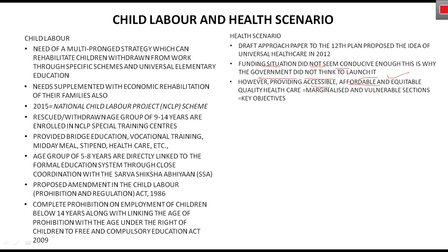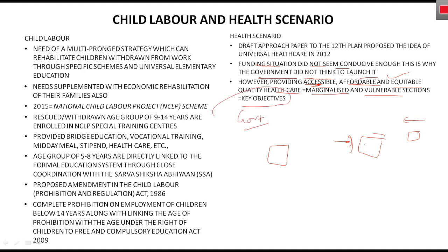However, providing accessible, affordable, and equitable quality health care to the marginalized and vulnerable section of society is the key objective of Government of India. Accessible का मतलब है हर जगह — remote areas में भी — health care की facility हो। Affordable मतलब reasonable prices हों। Equitable मतलब हर जगह बराबर distribution हो — कहीं ज्यादा कहीं कम नहीं।